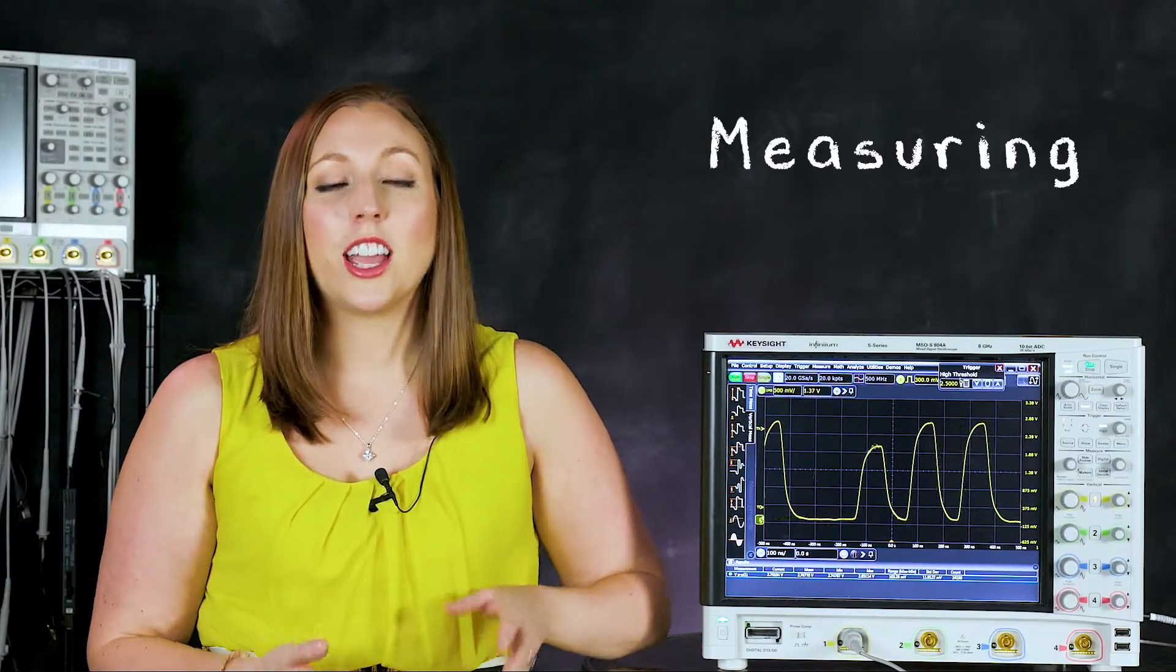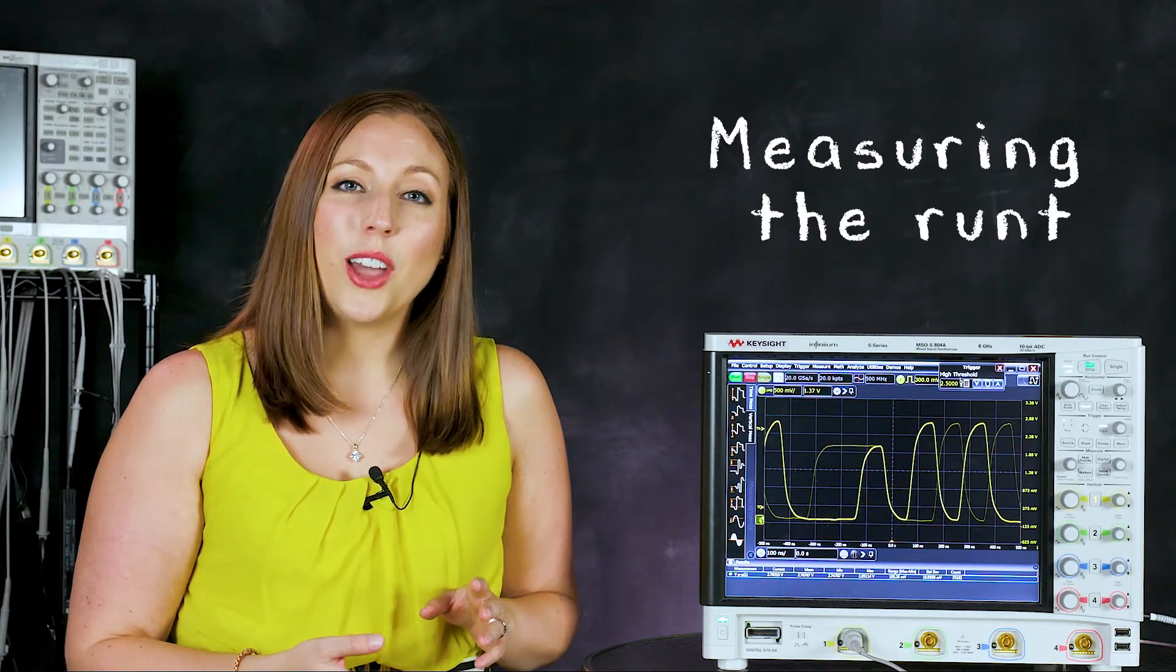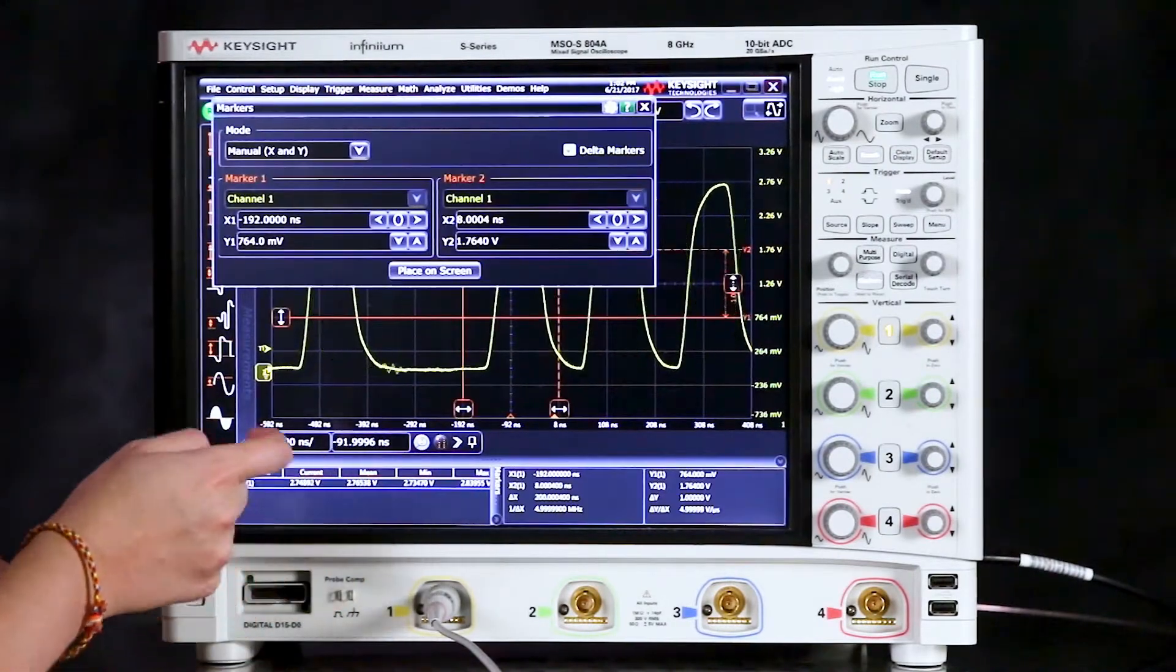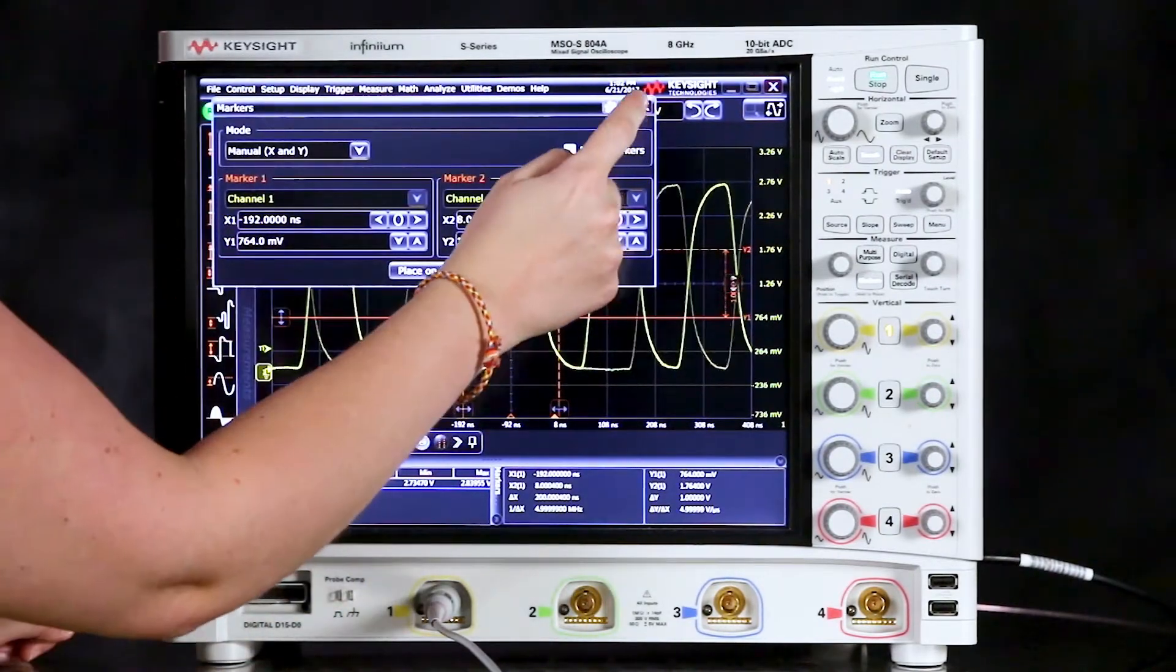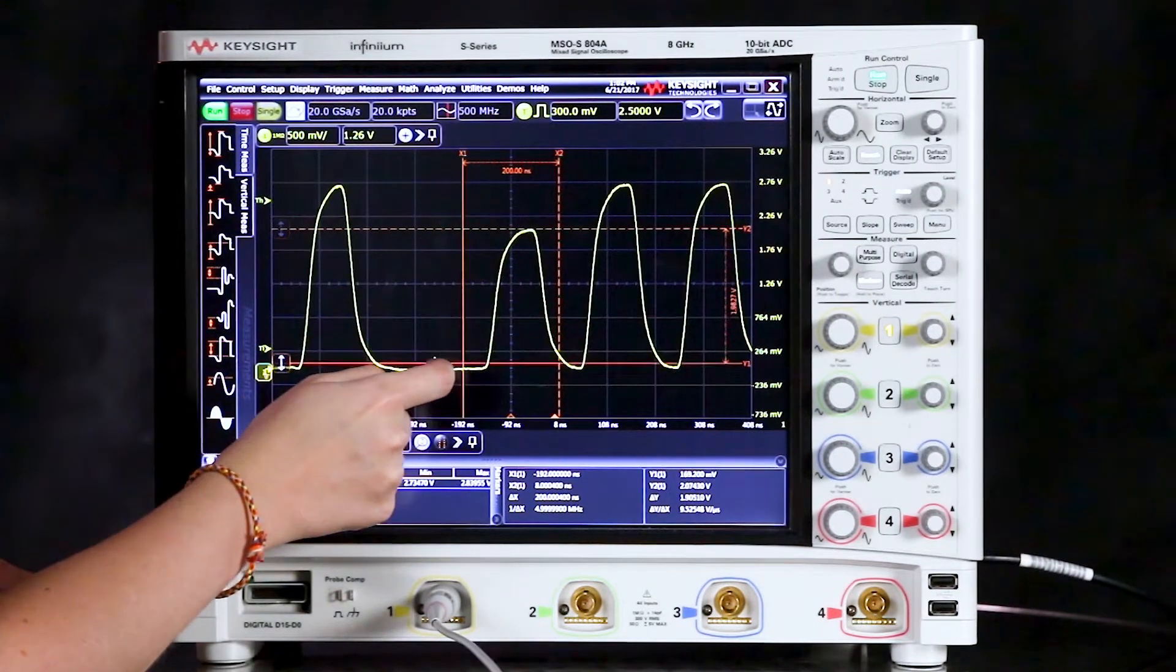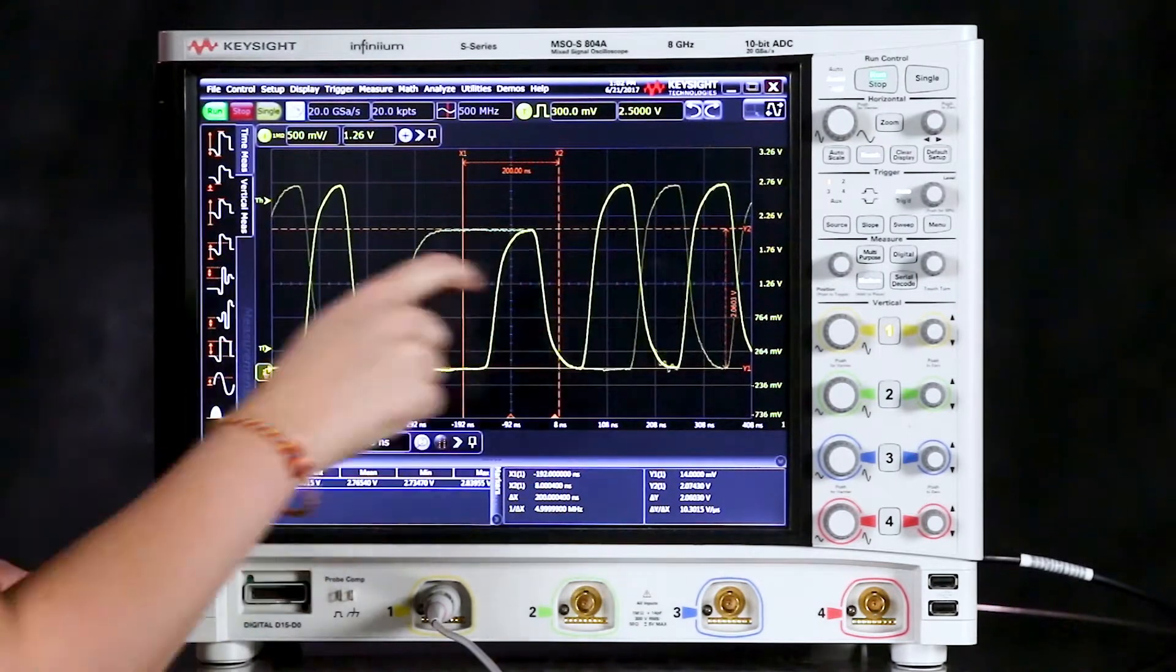Before I have my trigger set to run I couldn't quite tell what the voltage of those runt signals were. So let's go ahead and measure it with markers. We'll turn on markers here and we want it set to channel 1 and now we can drag my markers to the top and the bottom of my waveform. And now I can see that that runt is about 2 volts peak to peak.